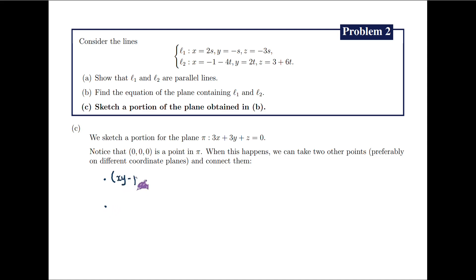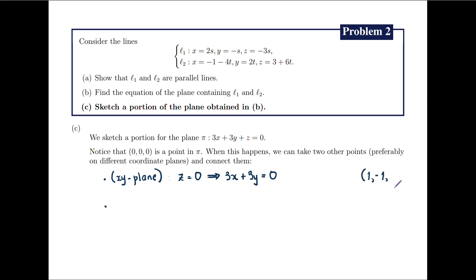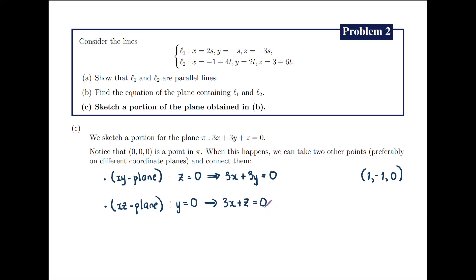Let's try to look for points on the xy-plane. On the xy-plane, z is set to 0, so we get the equation 3x plus 3y equals 0. One solution is when x equals 1 and y equals negative 1, giving us a point in pi with coordinates (1, negative 1, 0). Next, we take a look at the xz-plane. On the xz-plane, y is set to 0, so we get 3x plus z equals 0. One solution is x equals negative 1 and z equals 3, giving us the point (negative 1, 0, 3) on pi.